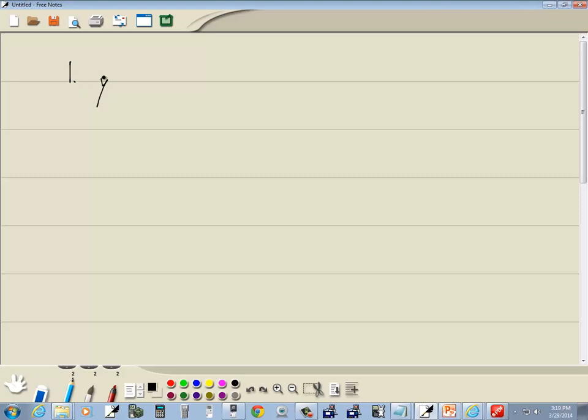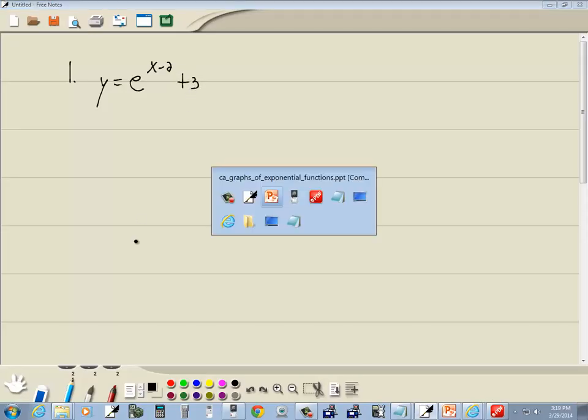Okay, so we got y is equal to e to the x minus 2 plus 3. And we want to graph it.